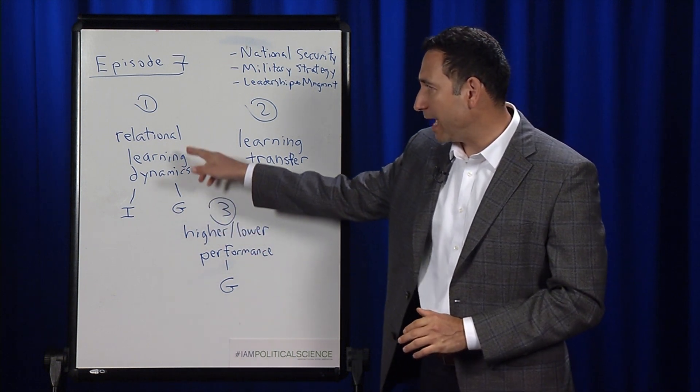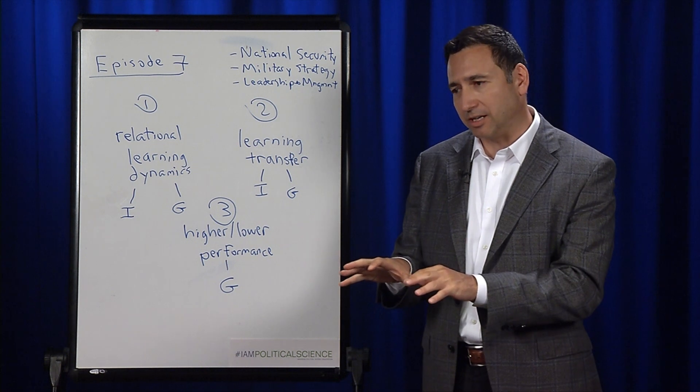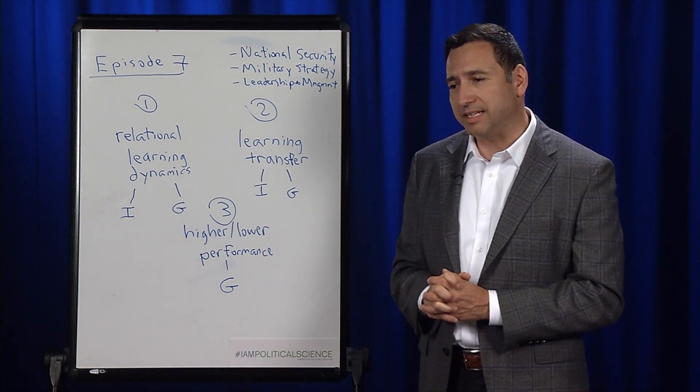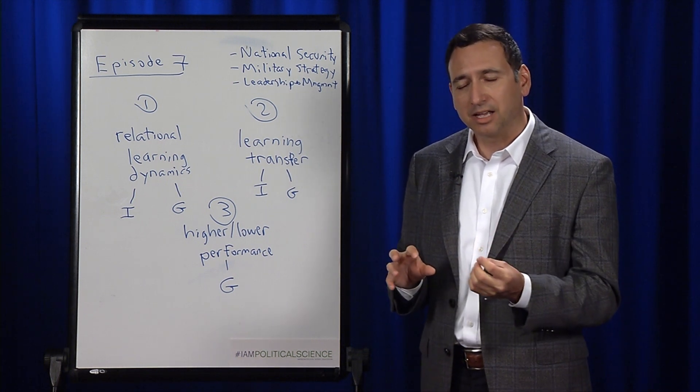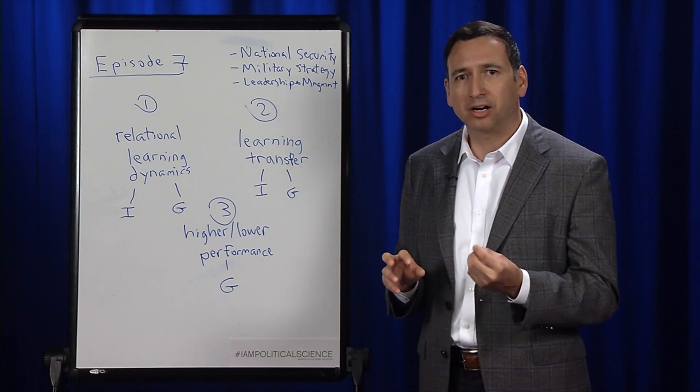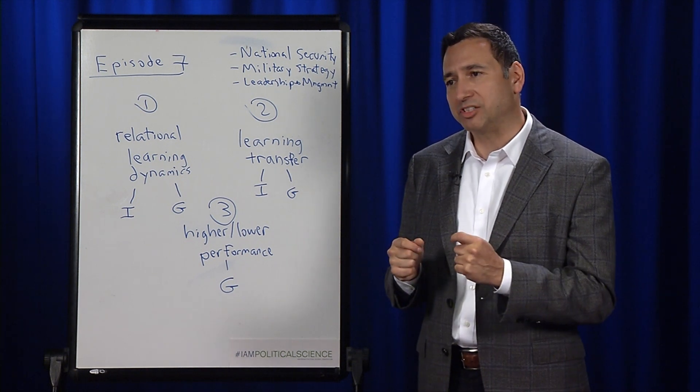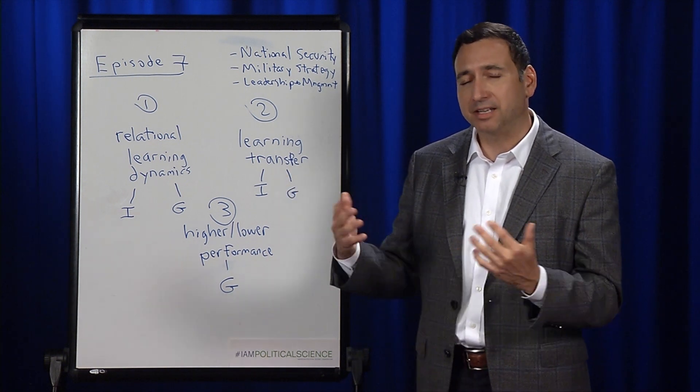At the group level, when we have healthy relational dynamics, we hope to see during a problem-solving exercise that the group is engaged in fruitful collaboration and dialogue, that they are engaged in debate and argumentation in the highest sense of the term, where they're questioning assumptions and questioning each other's causal logics about why things might happen if they intervene.